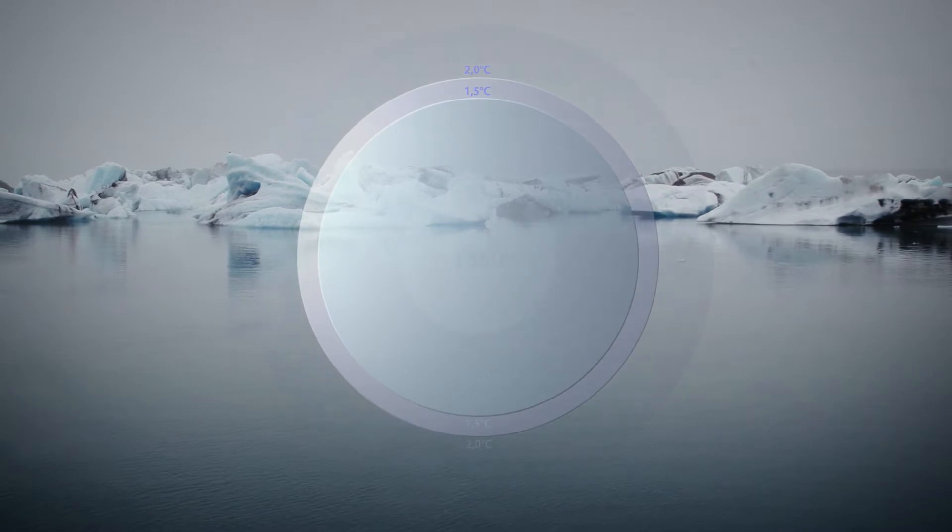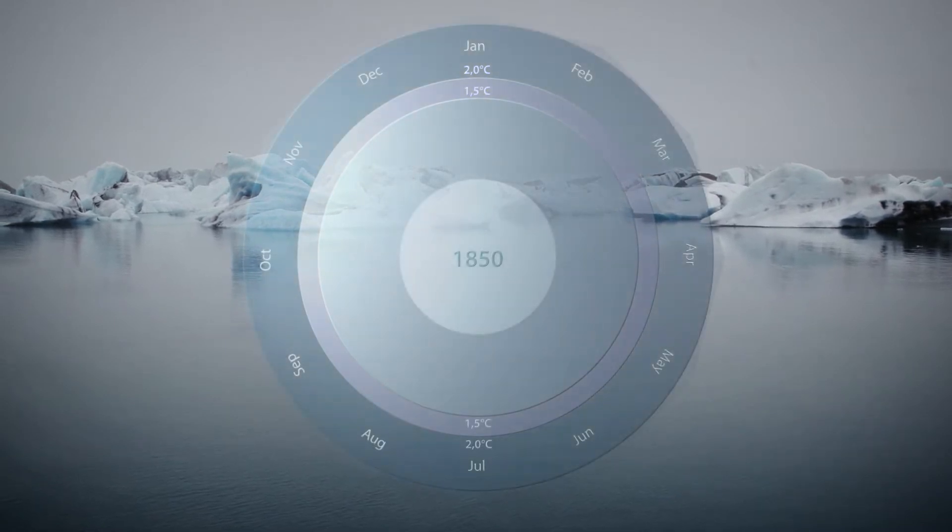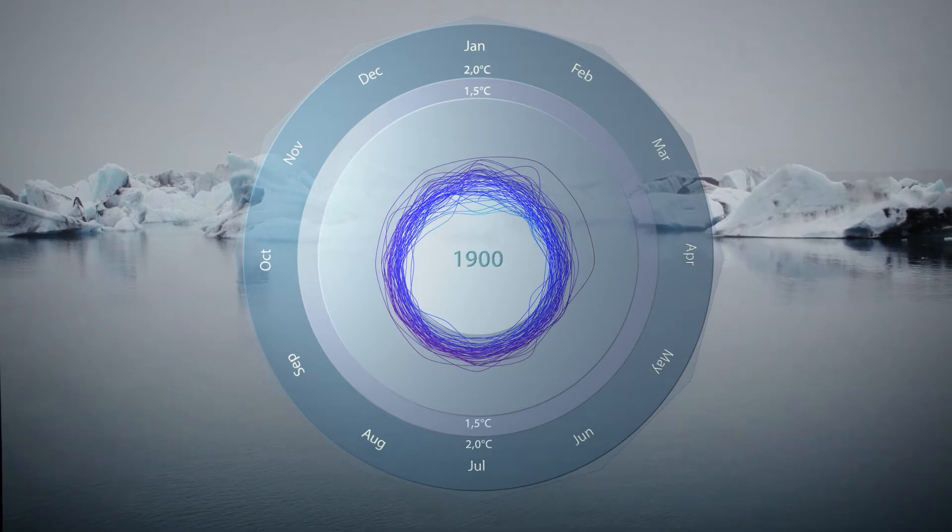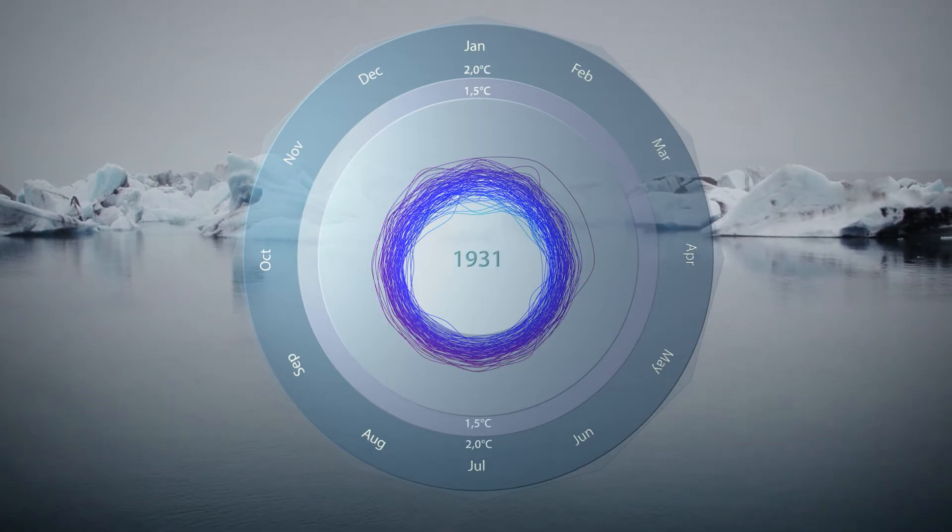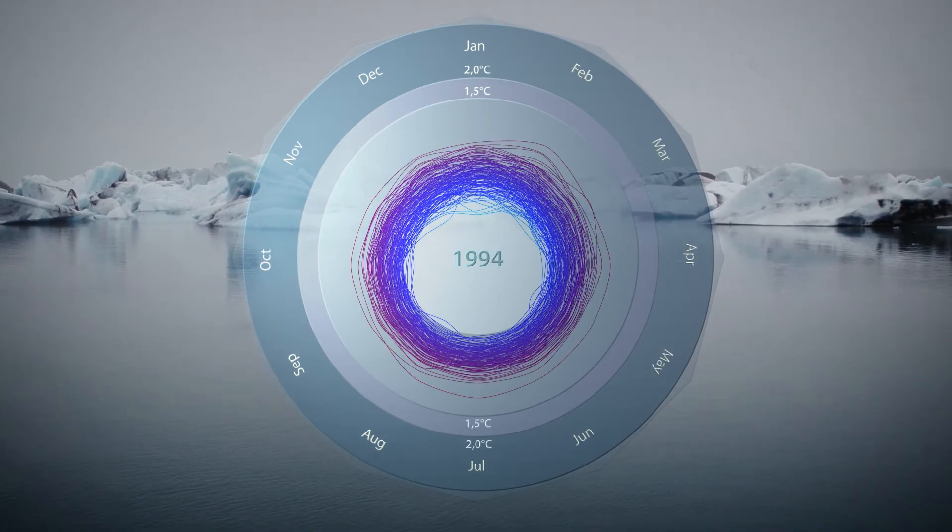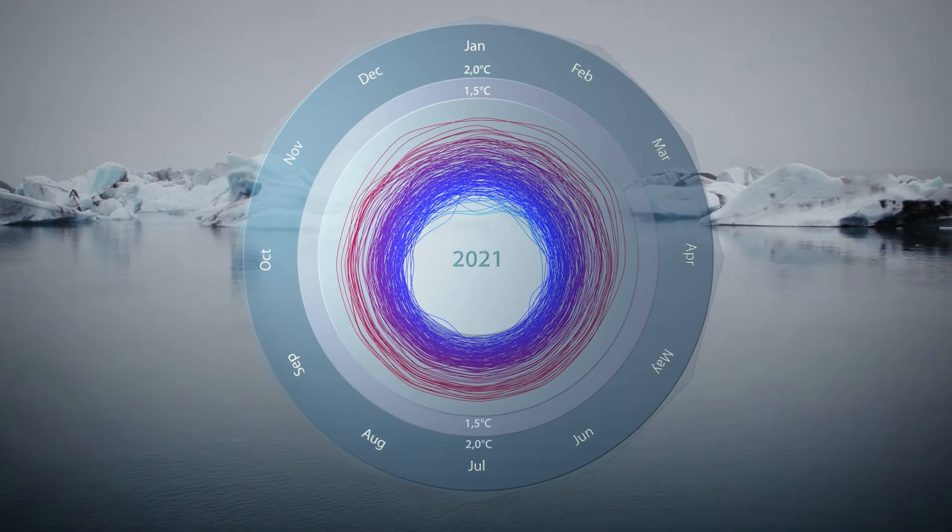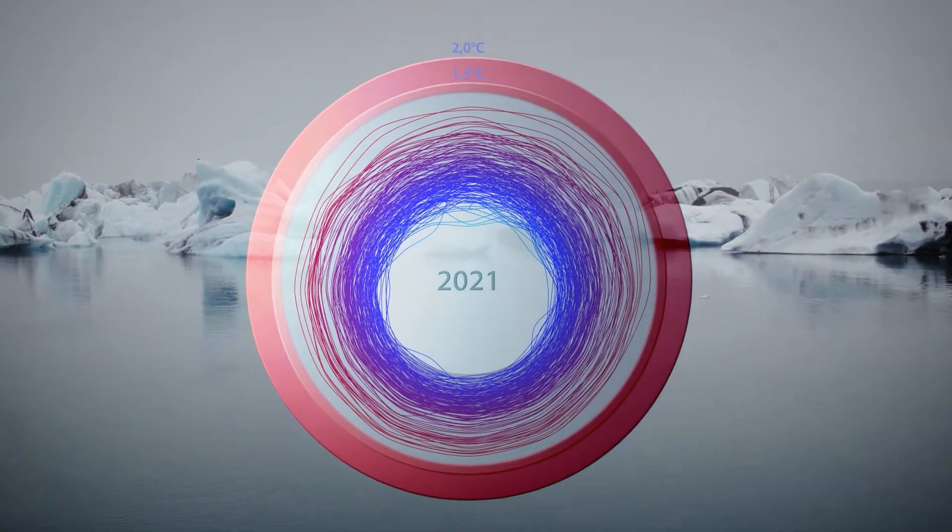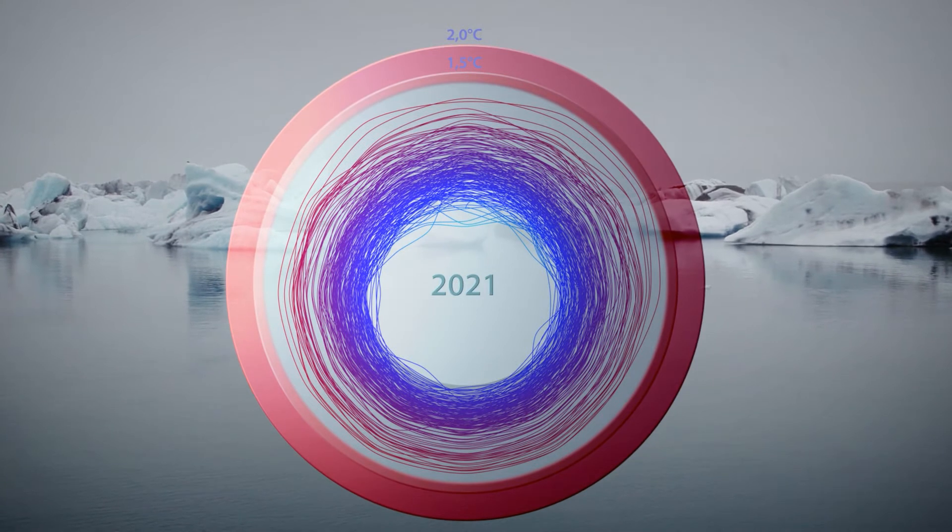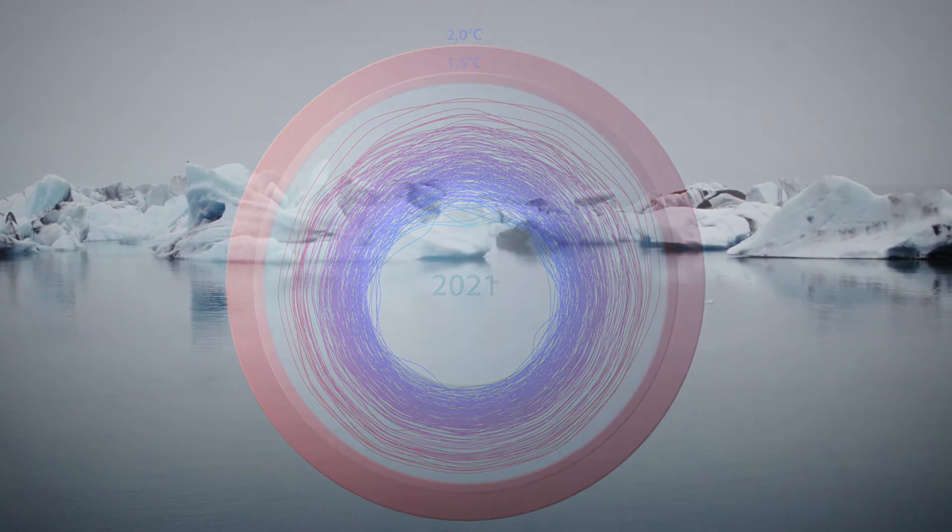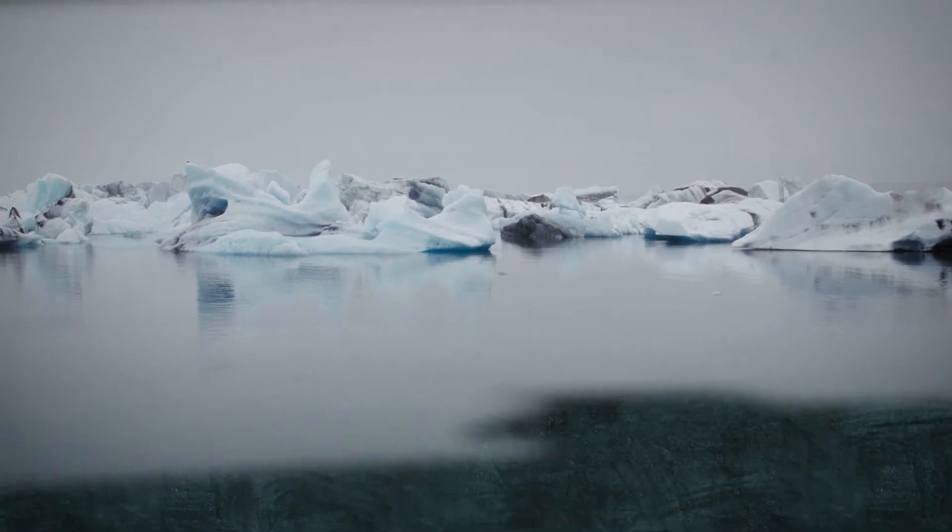And where do we stand today? Since the beginning of the industrial age, we've already heated up our planet by roughly 1.1 degrees Celsius. And we do not want to exceed 1.5 or at most 2 degrees Celsius. This leaves us with a narrow range of 0.4 to 0.9 degrees Celsius if we are to comply with the Paris Agreement.